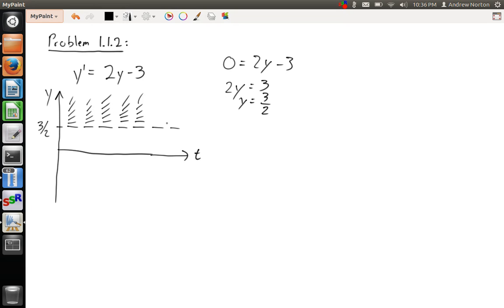And again, accuracy is not really as important as the general idea of what's going on with this direction field. A computer can be used for accuracy. So also, as y gets smaller, this negative 3 will become more important and we start going in the negative direction.